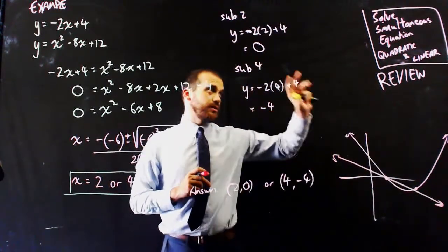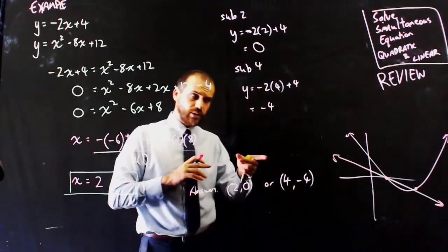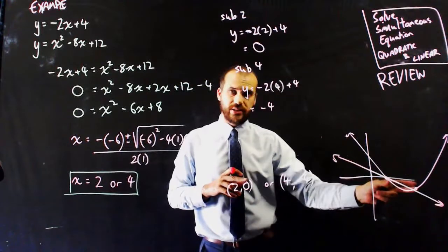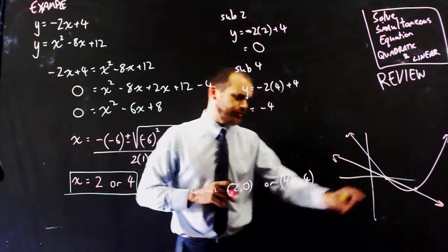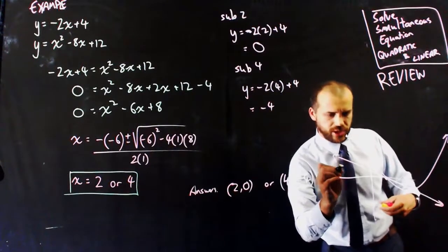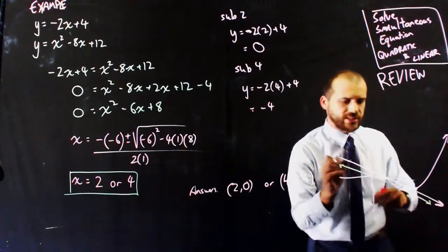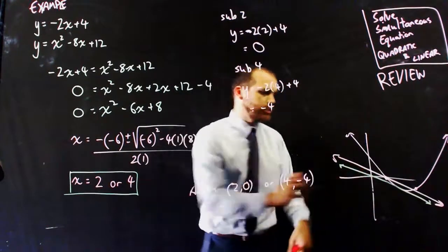The very last thing I'm going to say about solving simultaneous equations when you've got a quadratic and a linear is you might get two answers, you might get one answer. One answer happens when the line comes down and only just touches at a single point. It's called a tangent. That's one answer.